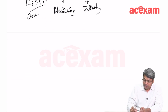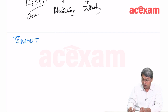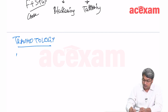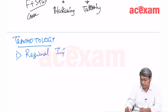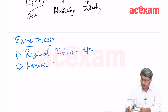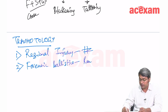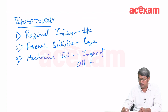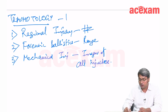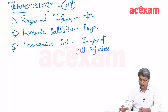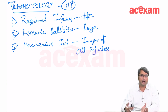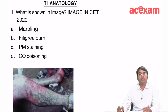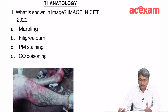In summary, the main high-yield topics in traumatology from which questions have been asked recently are: regional injuries — specifically fractures — forensic ballistics including image-based questions on range of fire, and mechanical injury especially images of all wound types. Questions can be reasoning-assertion type, image-based, or matching. Next, we discuss questions from thanatology.